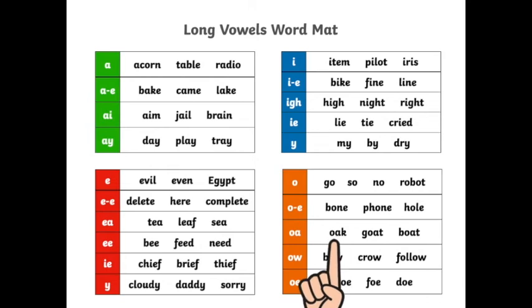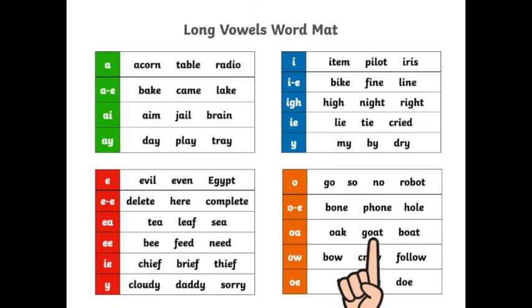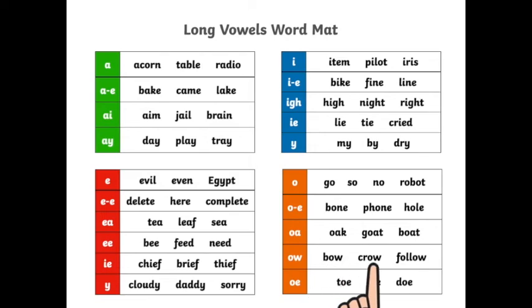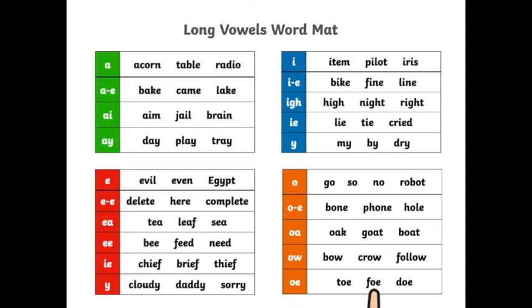O-K: Oak. G-O-T: Goat. B-O-T: Boat. B-O-O-K: Crow. S-O-L-O: Solo. Follow. And the last row of these O words: Toe, Foe, Doe.